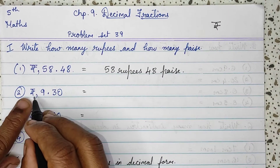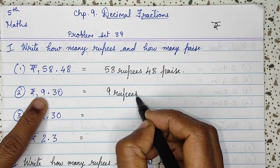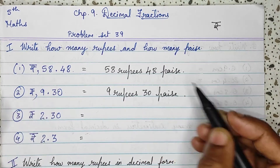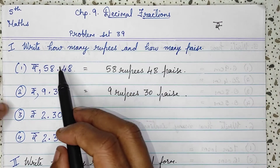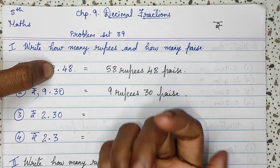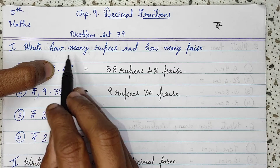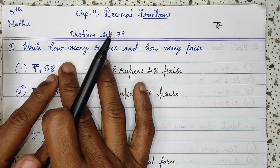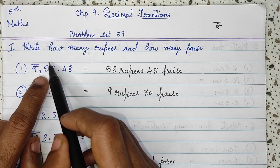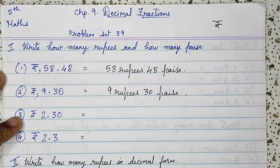Second question: R 9 means 9 rupees and 30 paise. See, here there is a decimal given. 1 rupee is equal to 100 paise. So, the digits after the decimal will be paise and the digits before the decimal will be rupees. Before the point it is rupees and after the point it is paise.